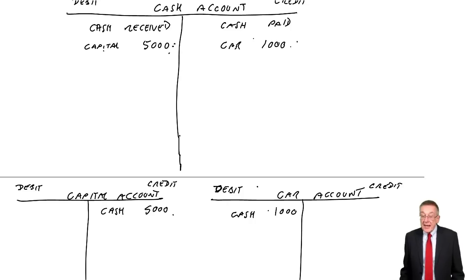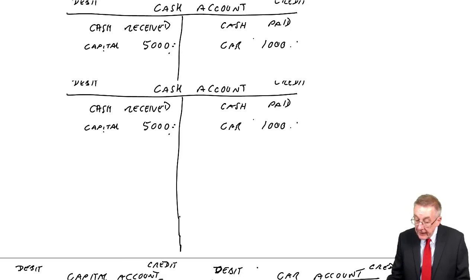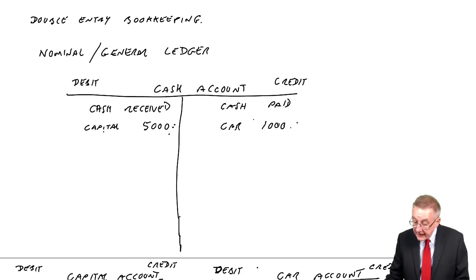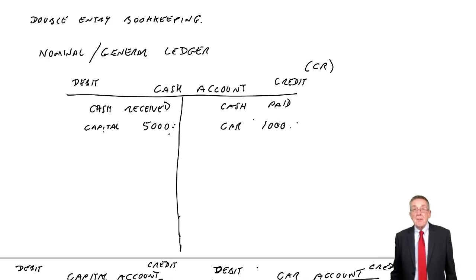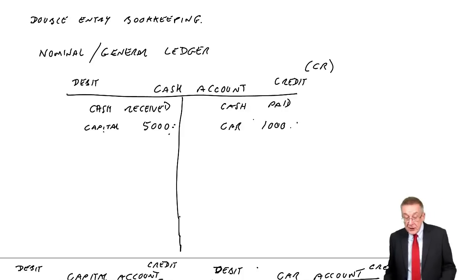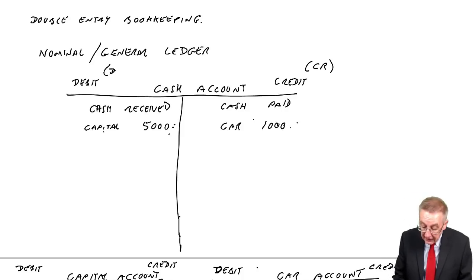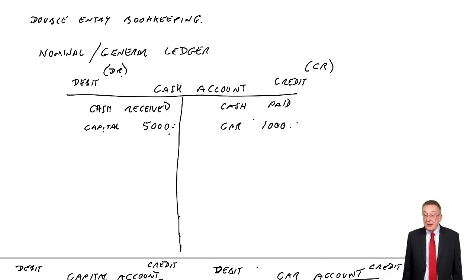When you speak entries, for the car purchase, we say: we credit cash with 1,000, we debit car with 1,000. The abbreviation for credit is CR, and the abbreviation for debit is DR. DR is debit, CR is credit.